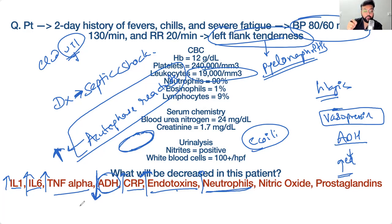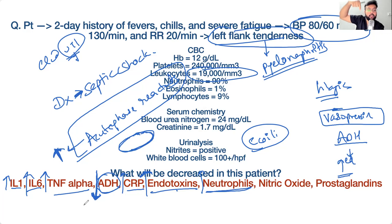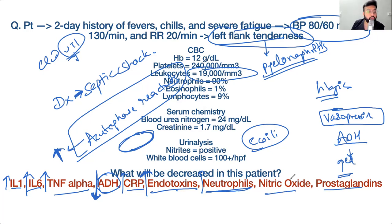Because ADH cannot act adequately on blood vessels, the vessels dilate — that is why you have septic shock. Vasopressin dysfunction is actually the main reason for hypotension in septic shock. In other types of shock, vasopressin is high, but in septic shock it is low. Nitric oxide and prostaglandins — which are vasodilators — will be high.